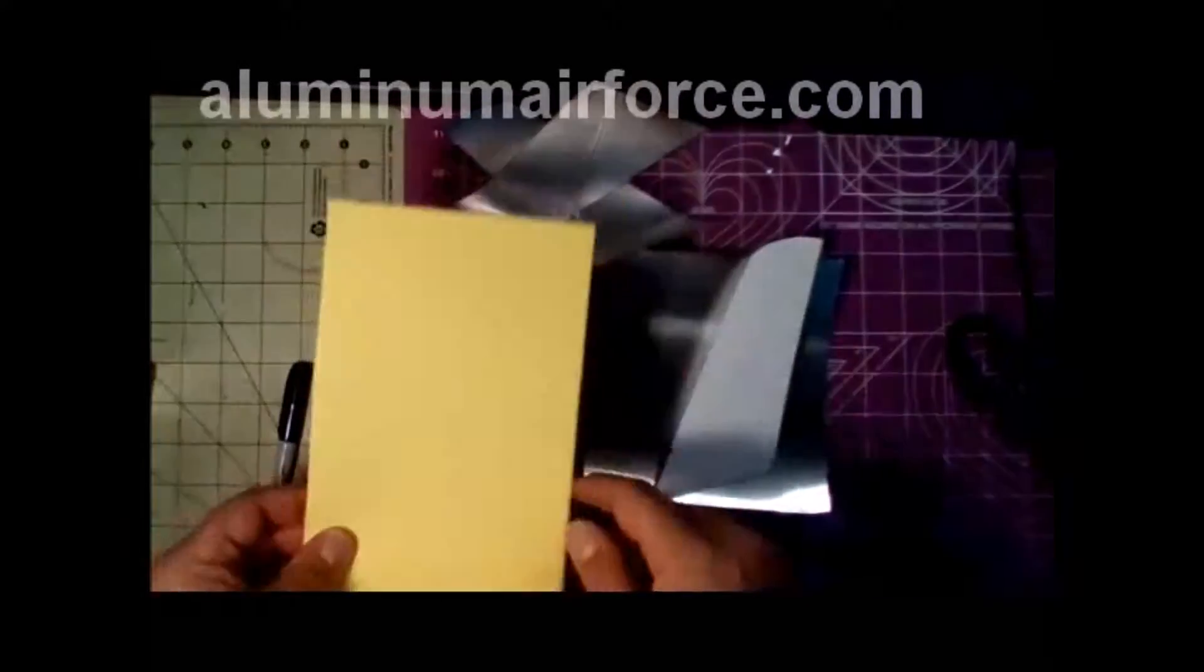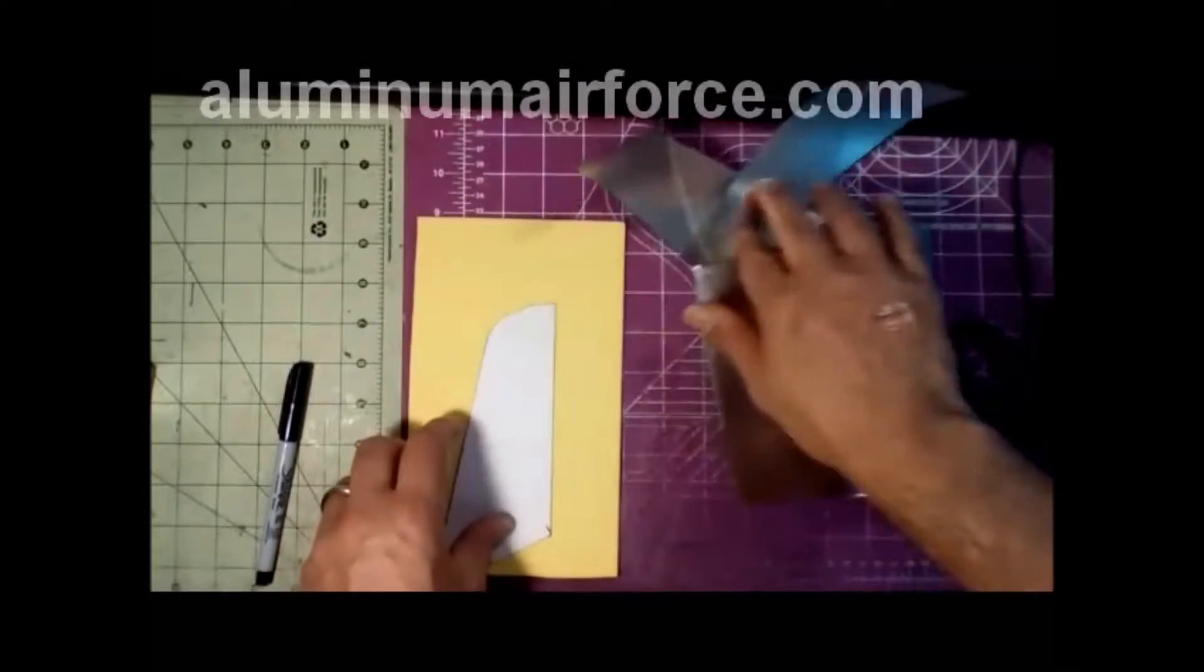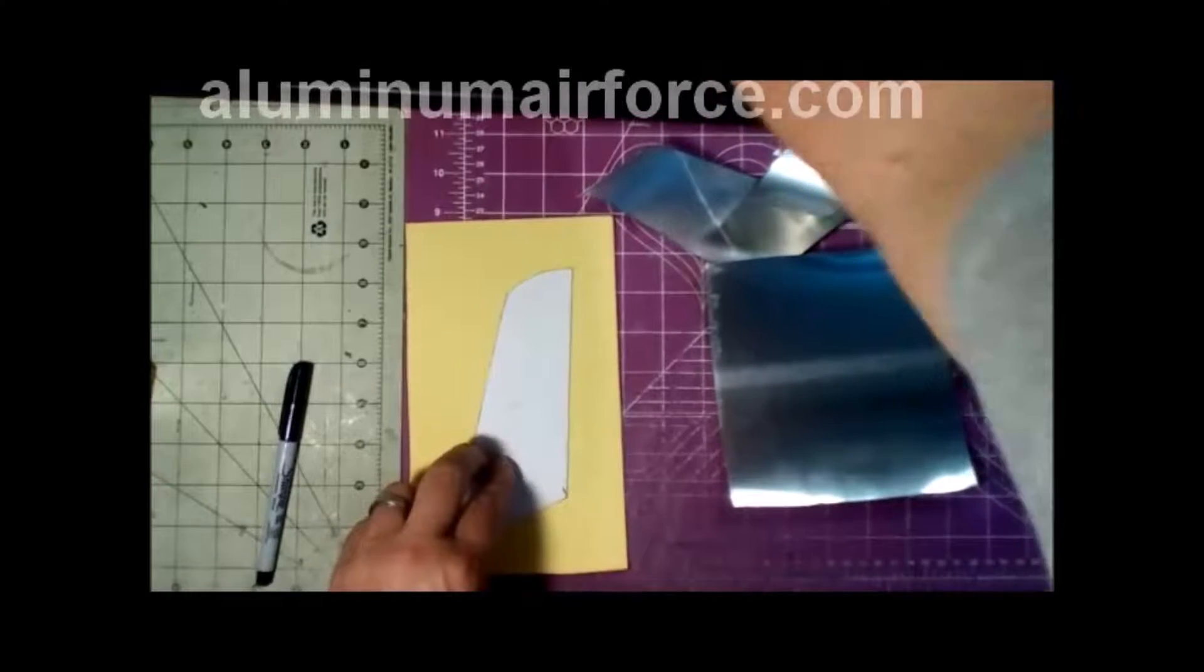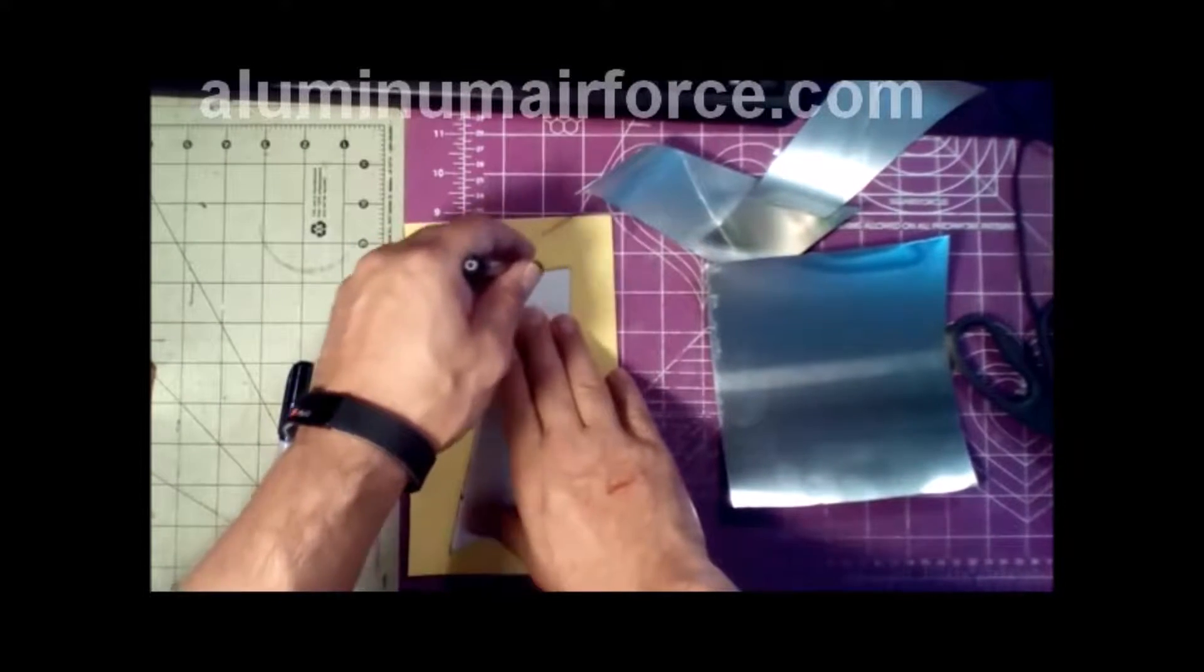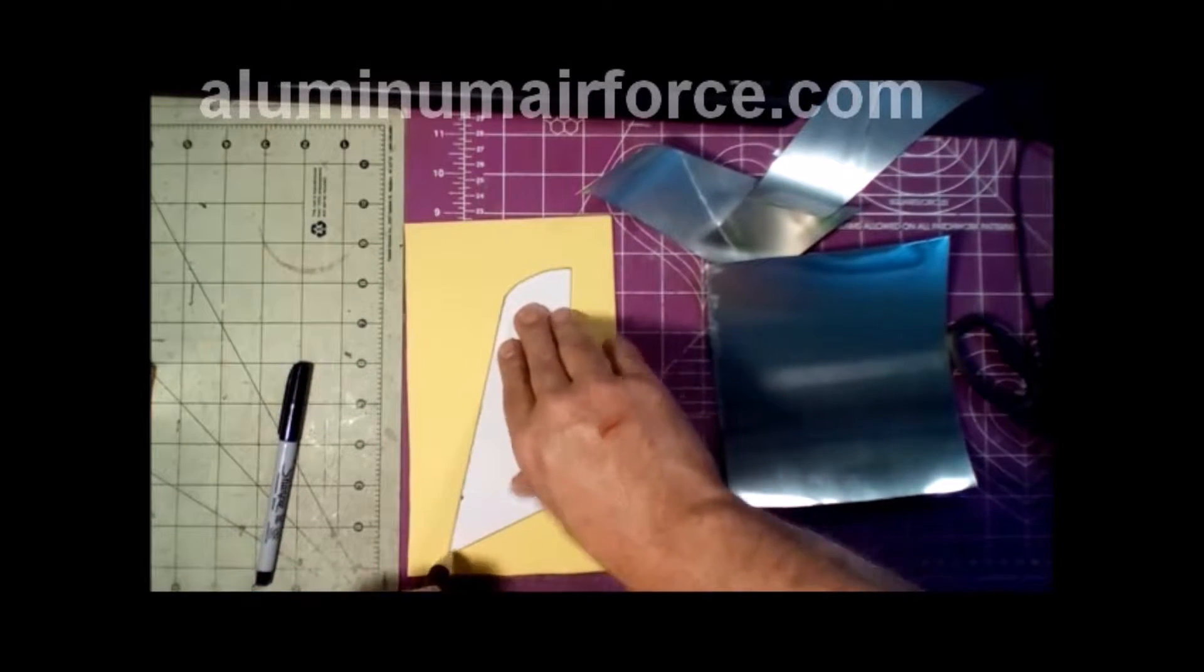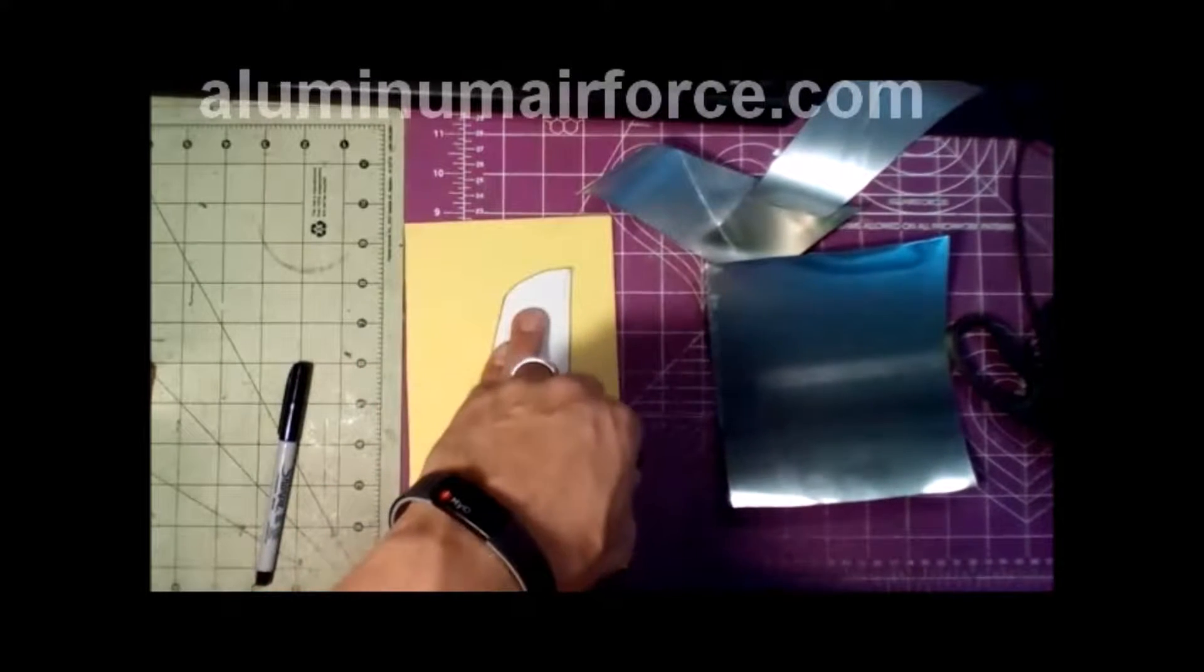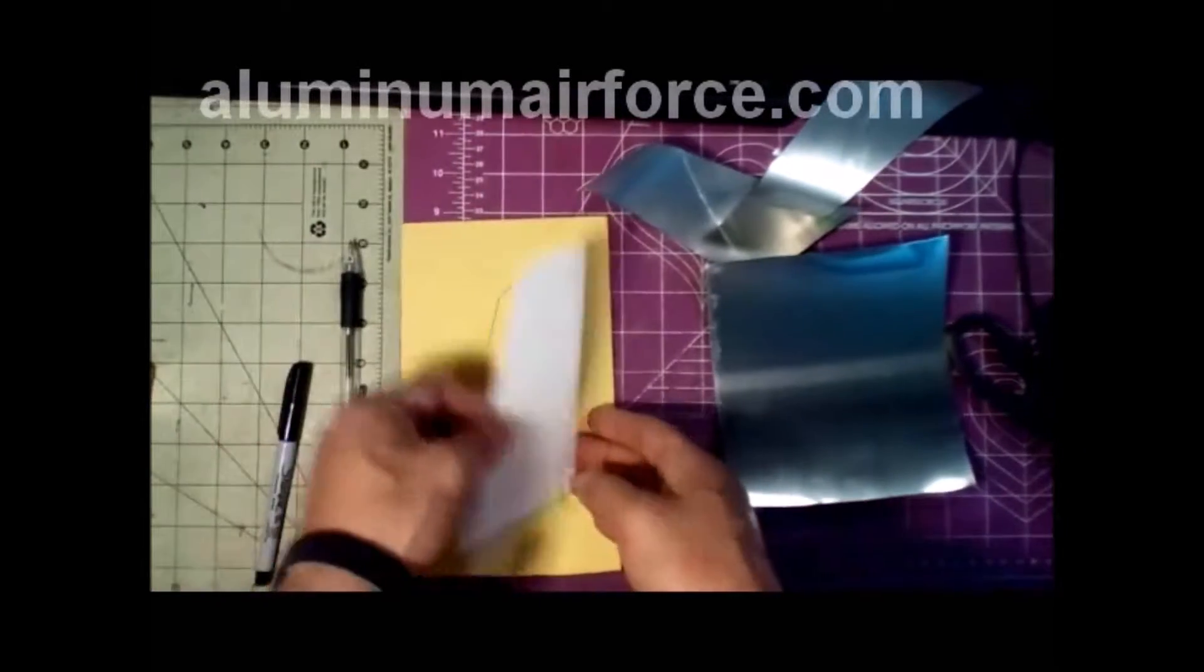We're going to concentrate on the Darice Craft Foam. You can get this at Walmart, most craft stores. We're going to trace our F-86 Sabre template wing using a ballpoint pen instead of a Sharpie. The ultra-fine point Sharpie has a tendency to bleed, makes the wings a little bit too thick, too long, distorted. We're going to use the ballpoint pen. It's going to give us some nice clean lines to cut around.